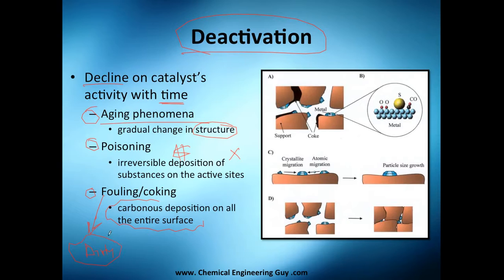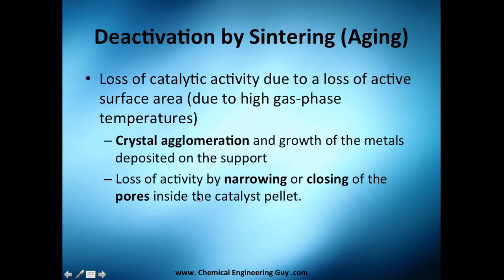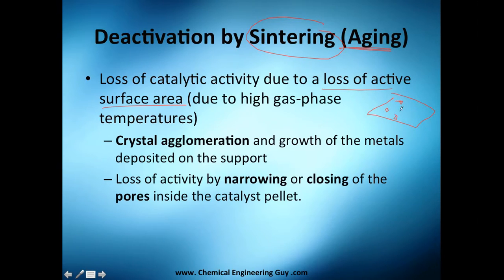In chemistry you cannot say dirty — you say fouling or coking, something more fancy. The first one is aging phenomena, also called sintering. It is the loss of catalytic activity due to a loss of active surface area. Before, you may have had a lot of area with many active spots, but with time they change their shape and no longer work. This is typical at high temperatures — the higher the temperature, the more you promote crystallization of materials, and once they change shape, you cannot use them anymore.